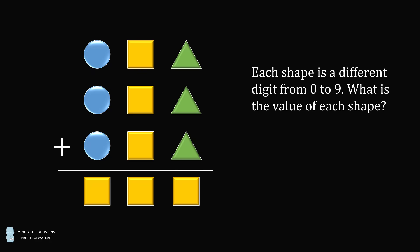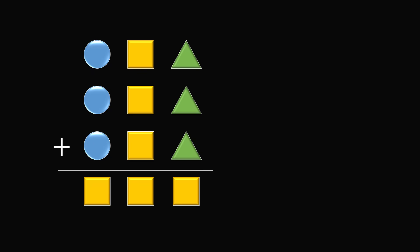So how can we solve this problem? I imagine there are many ways to go about it, but I'll share the technique I use. I like to start systematically by substituting each shape for a variable. Circle is represented by C, square by S, and triangle by T. So the first number is CST — the same for the second and third numbers — and the final number is SSS.